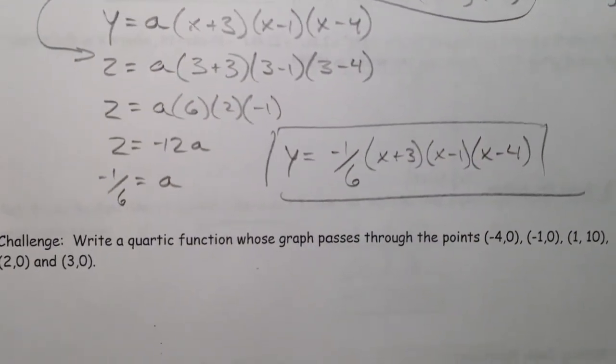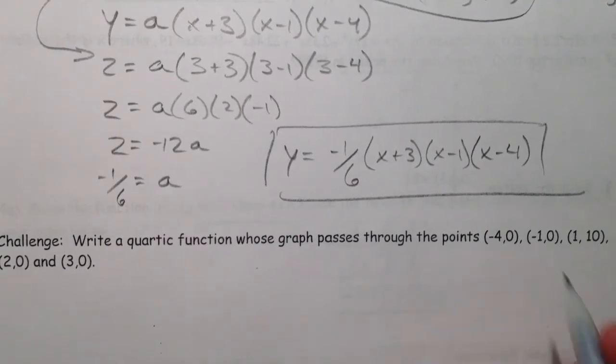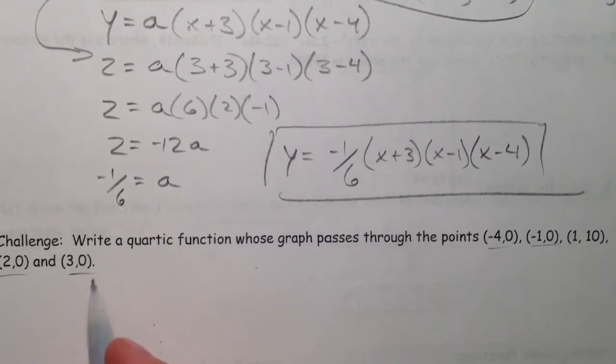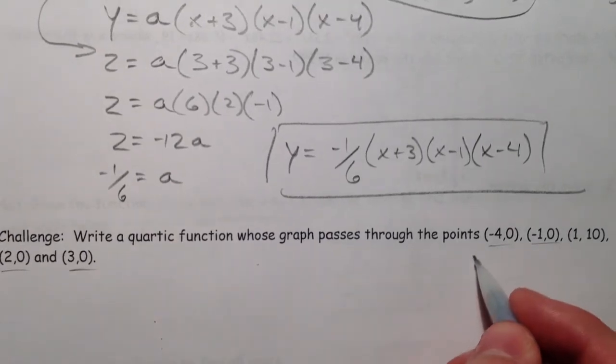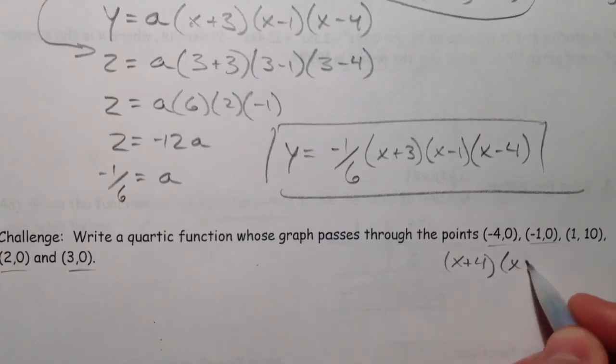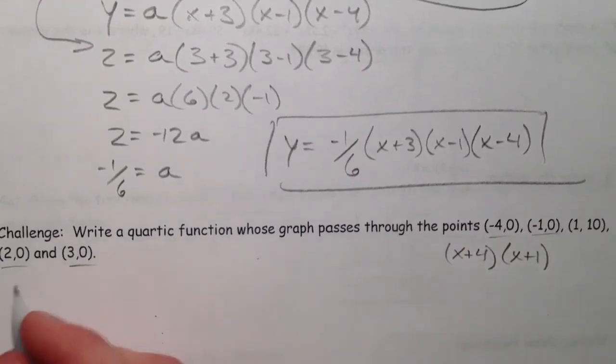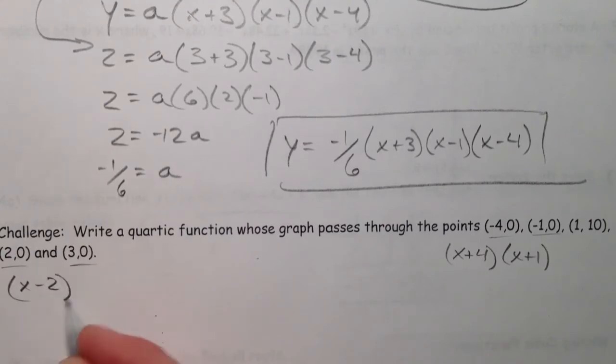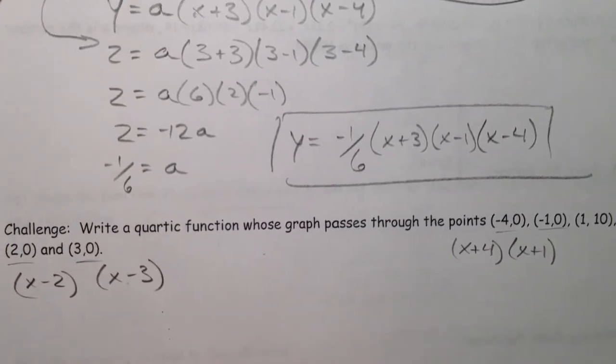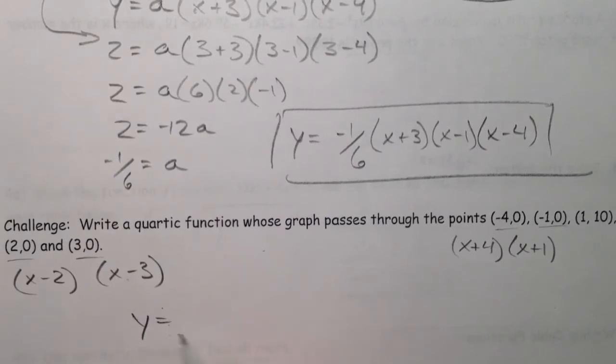Alright, lastly. Quartic function whose graph passes through 1, 2, 3, 4 zeros. And so, x plus 4 is a root. x plus 1 is a root. x minus 2, and x minus 3. Those are all factors. As I keep saying root. And so, just like we've done on all of these.